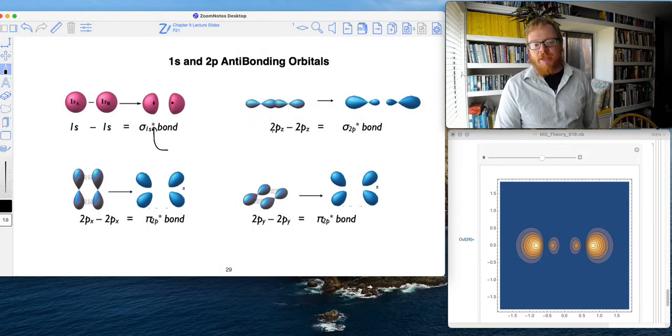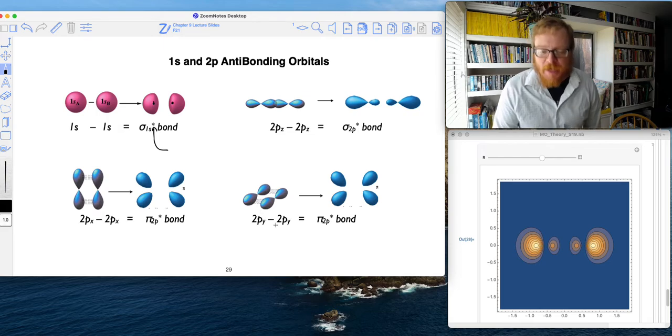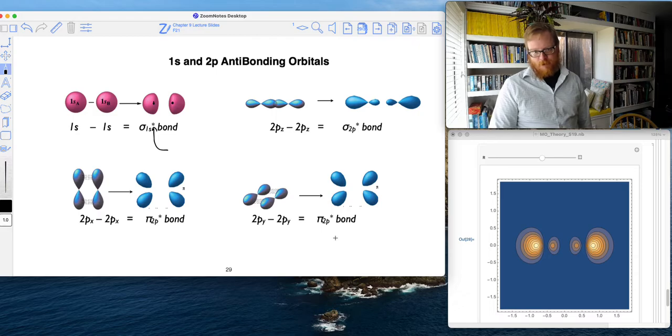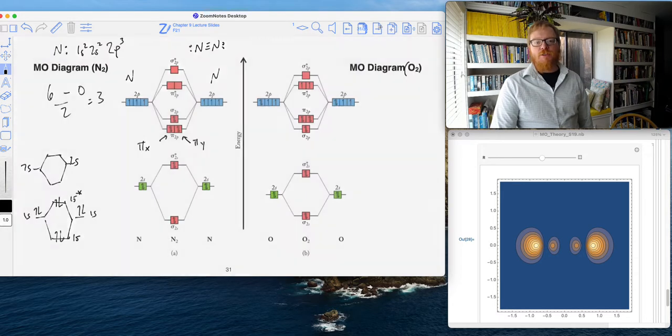We know that my 2PZ makes a sigma 2P, my 2PX makes a pi 2P, and my 2PY makes a pi 2P. So that's where we get the triple bond prediction in nitrogen.